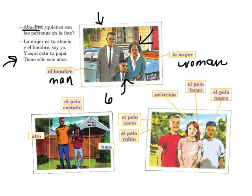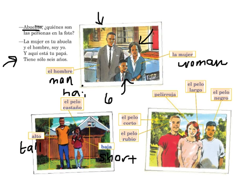Let's go ahead and write these down on our list of new vocab. Alto means tall. And baja or bajo means short. Remember that these will need to agree — like all adjectives have to agree — so that's why alto ends in O and baja ends in A, but you'll have to do that depending on who it is. El pelo castaño — el pelo is hair, and castaño means brown or chestnut. So el pelo castaño is brown or chestnut hair, but you can use pelo to describe lots of different kinds.